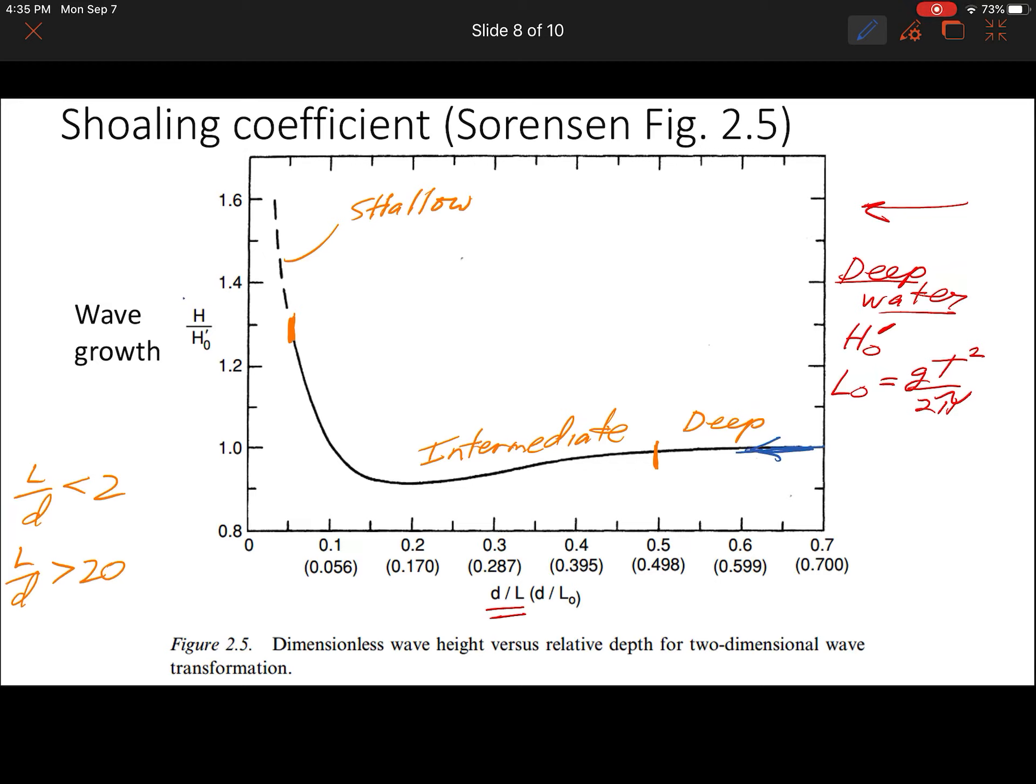The wave height, which we're tracking here—this is the wave height relative to that offshore wave height H naught prime. Notice in deep water this is pegged at 1. That's the value of this notch here.